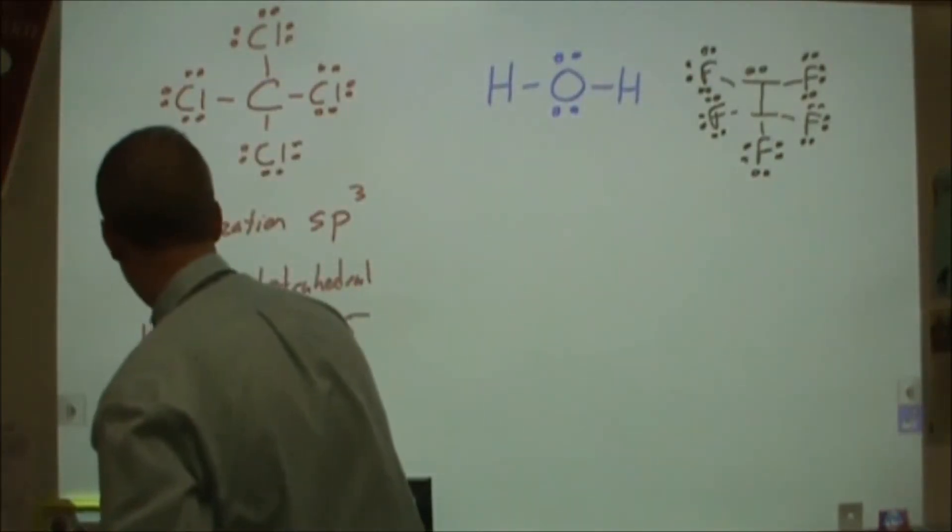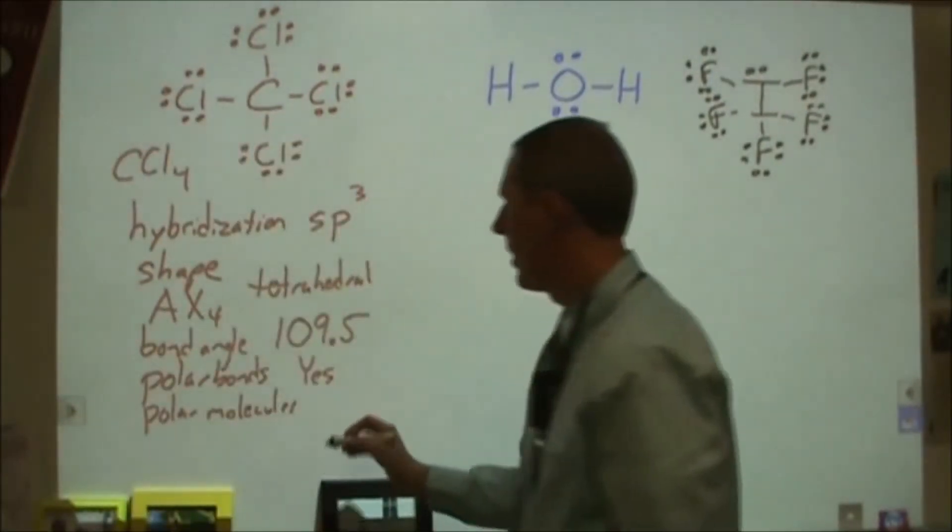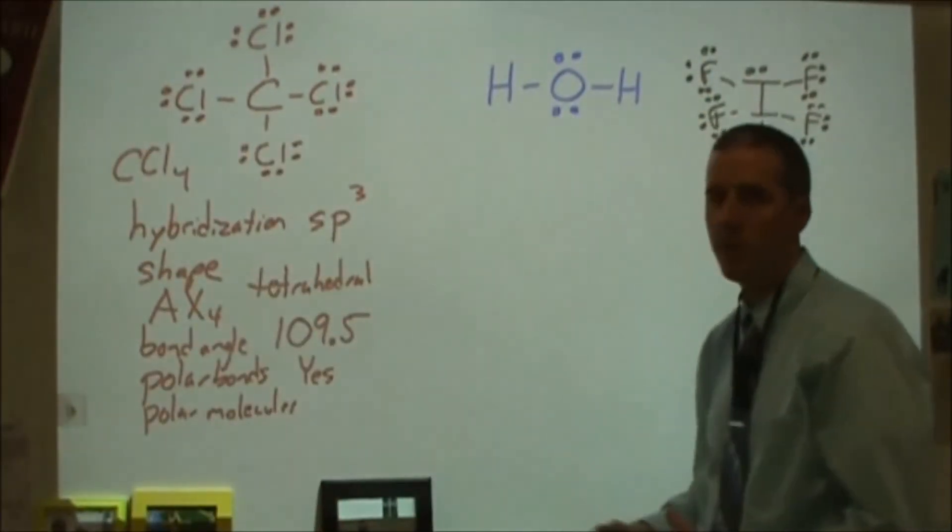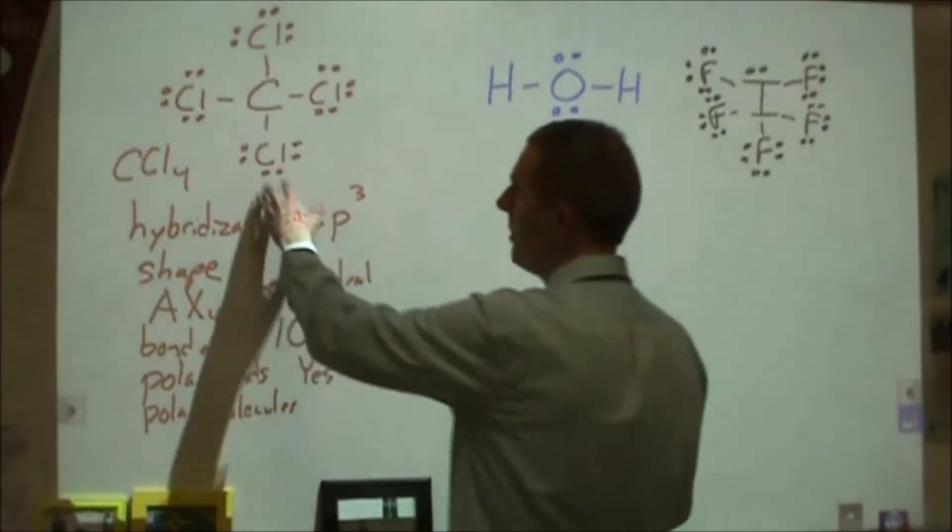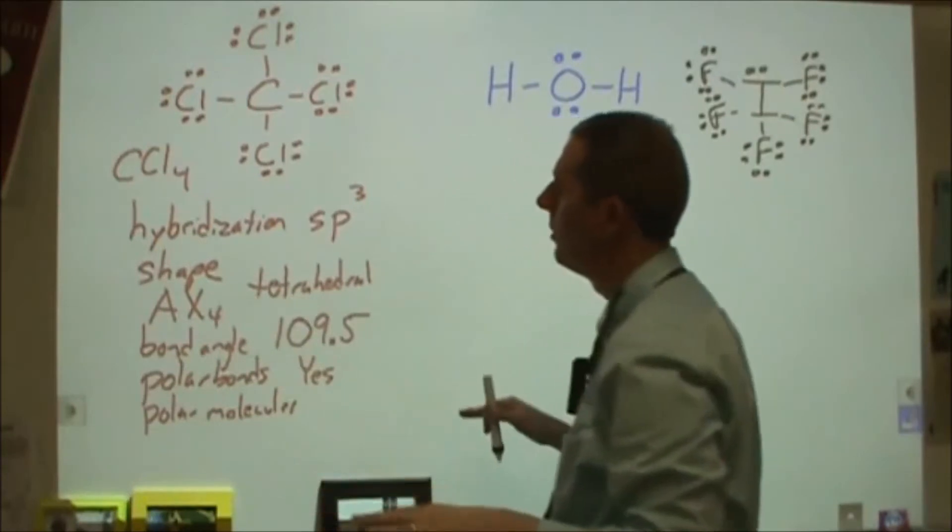Then I can ask if this is a polar molecule, and that includes whether or not it has polar bonds, as well as the symmetry of the molecule. So this is a very symmetrical molecule. Not because of the cross-like structure here in the 2D Lewis structure, but in the tetrahedral 3D image of this molecule,